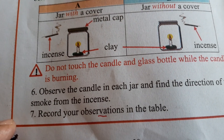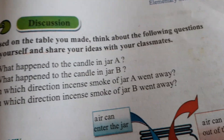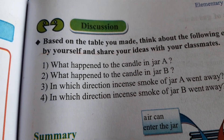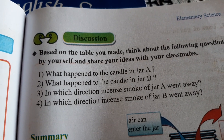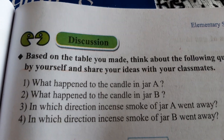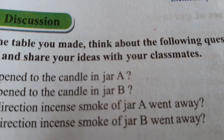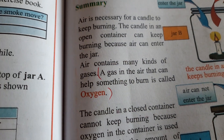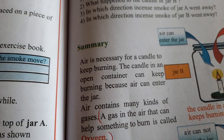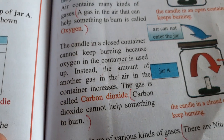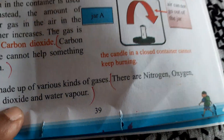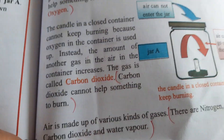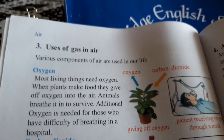From the discussion part, you have to read the questions and discuss with your mother, brother, sisters, or father. It is written to share your ideas with your classmates, so you can talk with them over the phone or discuss with your parents. In the summary: oxygen - a gas in the air that can help something to burn is called oxygen. Carbon dioxide cannot help something to burn. You have to do some practical activities at home if you get interested. There is nitrogen gas - there are nitrogen, oxygen, carbon dioxide, and water vapor in the air.